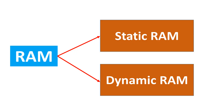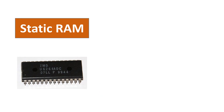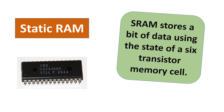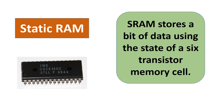Types of RAM are Static RAM and Dynamic RAM. Static RAM stores a bit of data using the state of a 6-transistor memory cell.